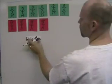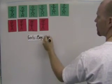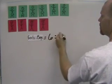If we wanted to know, first off, what's the ratio of girls to boys? Well, there's six girls and four boys, so the ratio is six to four.